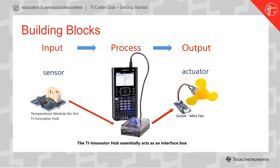Some sort of process takes place inside the brain of the system — that is your calculator and code. And then what do we want to happen in response to that? That's driving some sort of actuator, or the output. The example I have here is a Grove mini-fan as the actuator. The sensor, for example, could be inputting temperature from the environment. The process could be: at what temperature — perhaps when temperature reaches greater than 25 degrees — do we then turn on the fan?